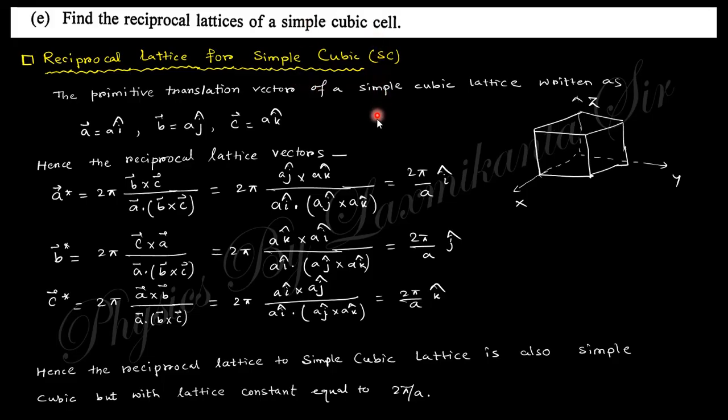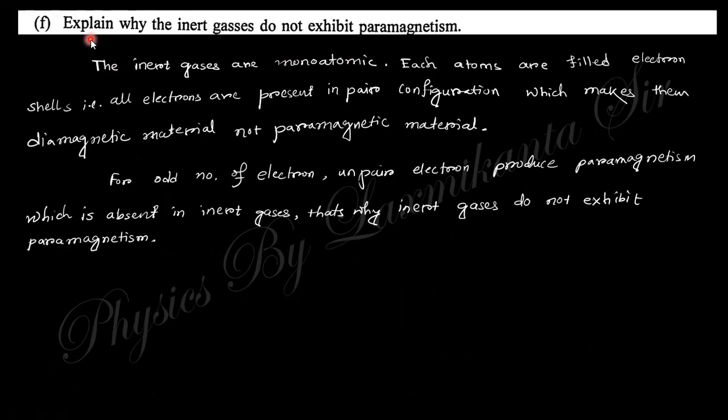Next question: Explain why inert gas does not express paramagnetism. Actually, within inert gas, this is monoatomic—a single atom—and the number of electrons within the atom is even, so the resultant magnetic field is zero. That's why this is a diamagnetic material. So inert gas is diamagnetic, not paramagnetic.